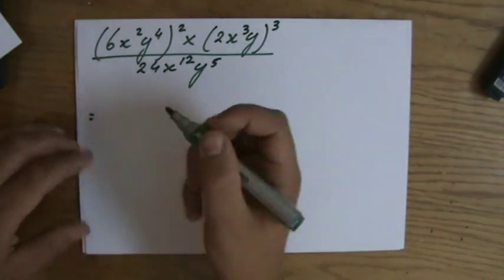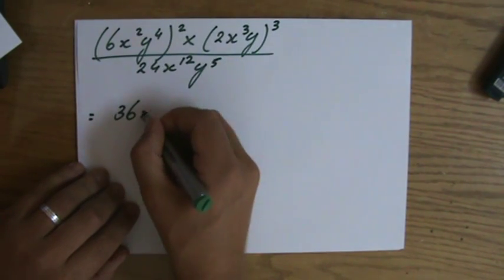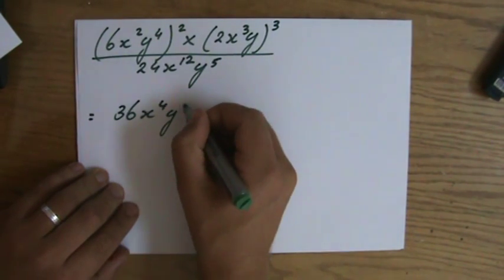I'm going to do it relatively quickly. So third law of the indices. 6 to the power of 2. 36x to the power of 4, y to the power of 8.